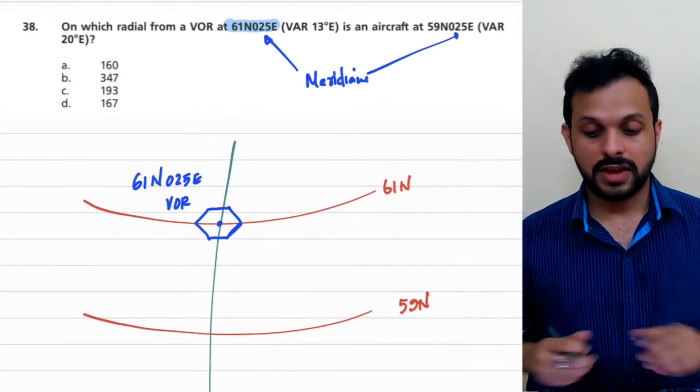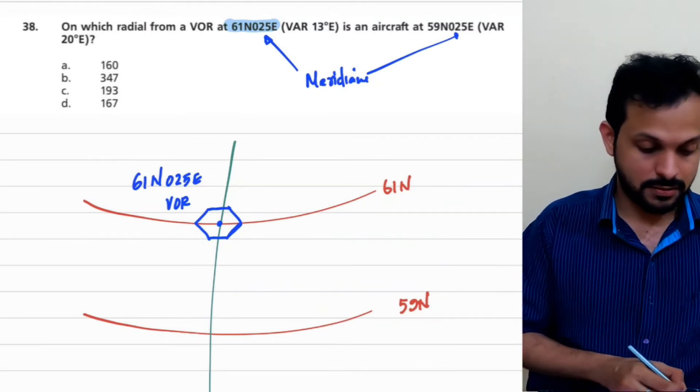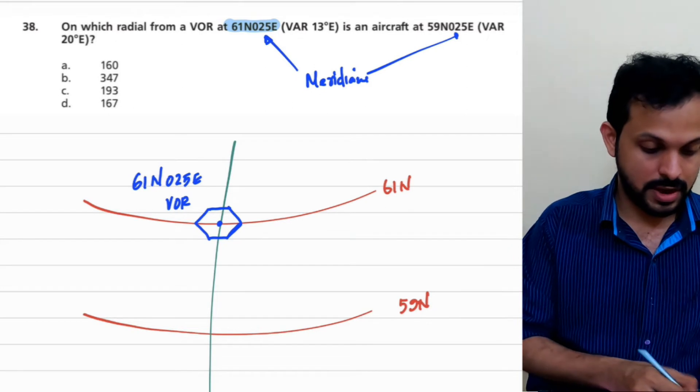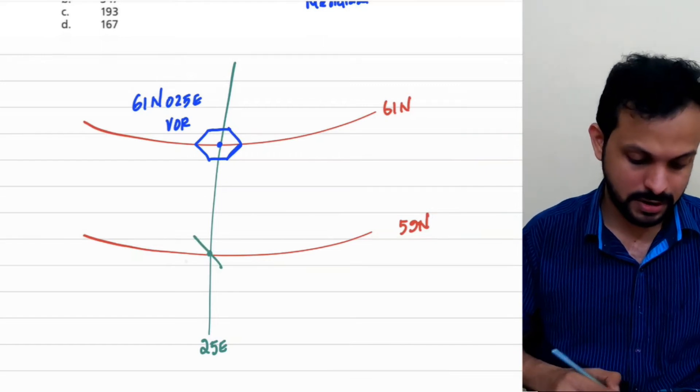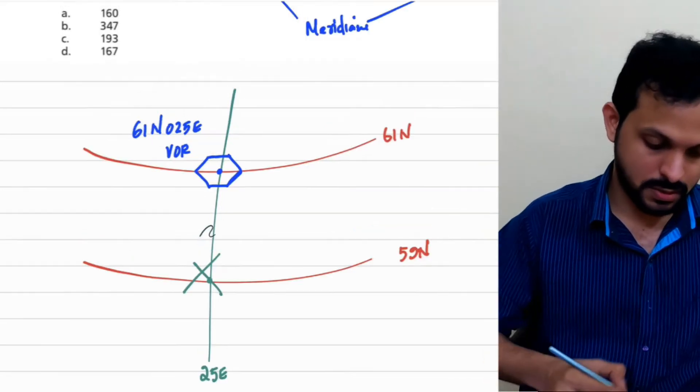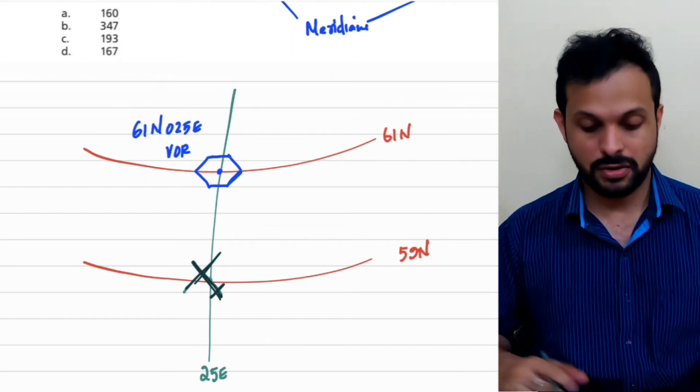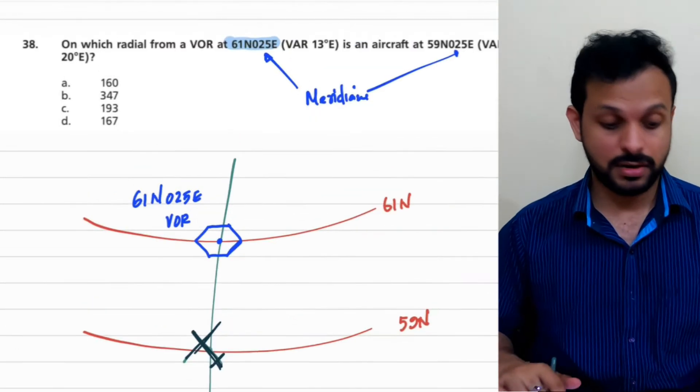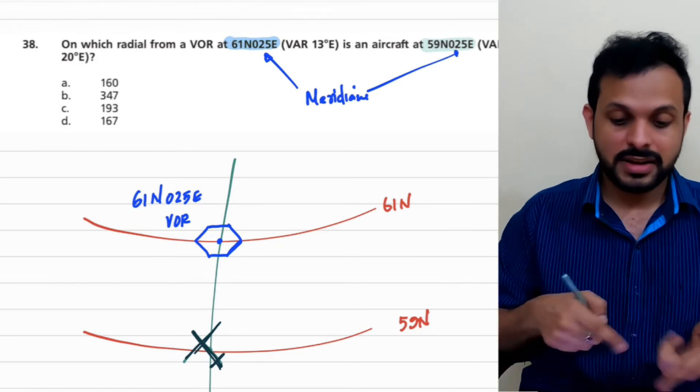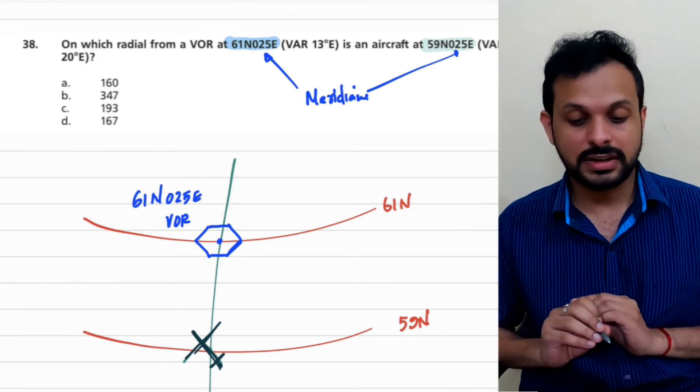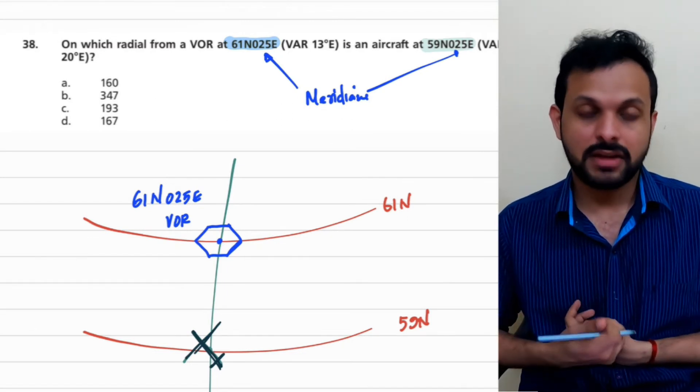Now let's locate the aircraft. Aircraft is on 59 north and again the same meridian, and therefore let's locate the aircraft as well. Let me choose any random heading here. So let me put the heading like this. Yeah, this is the aircraft. You can make your own heading, that's fine. As long as the aircraft is on 59 north and 25 east that should be fine. Let's write down the variations as well. Variation 13 degrees east and 20 degrees east, that's given in the question.